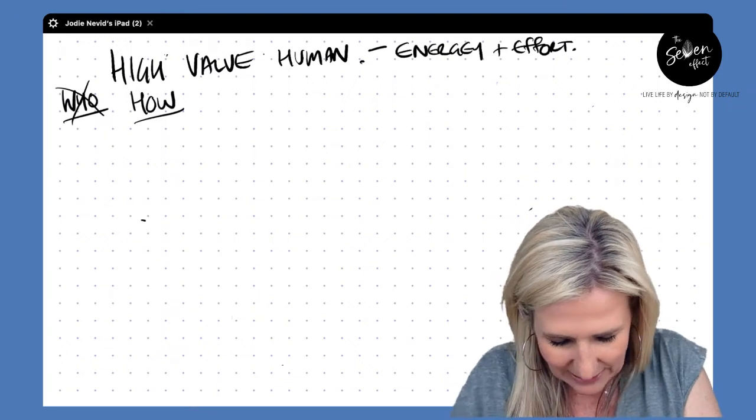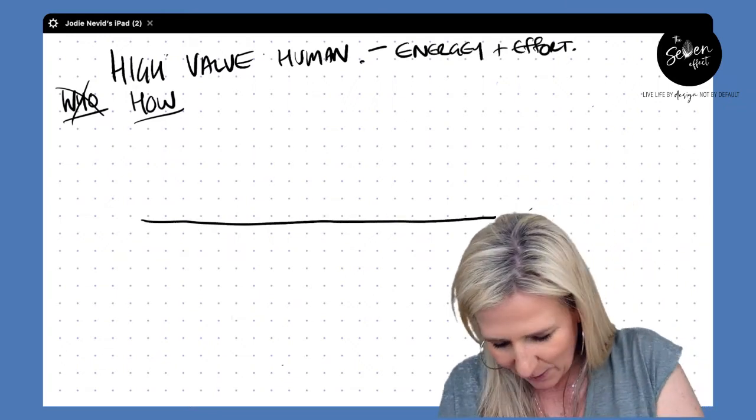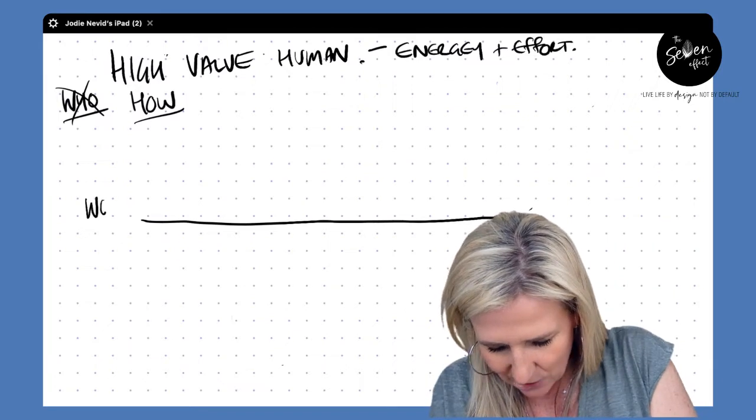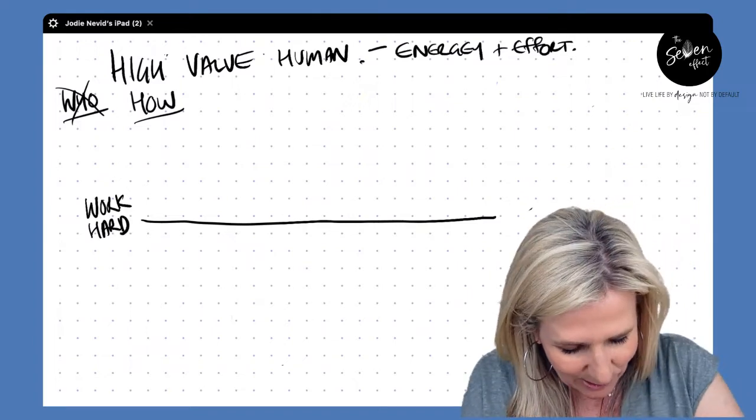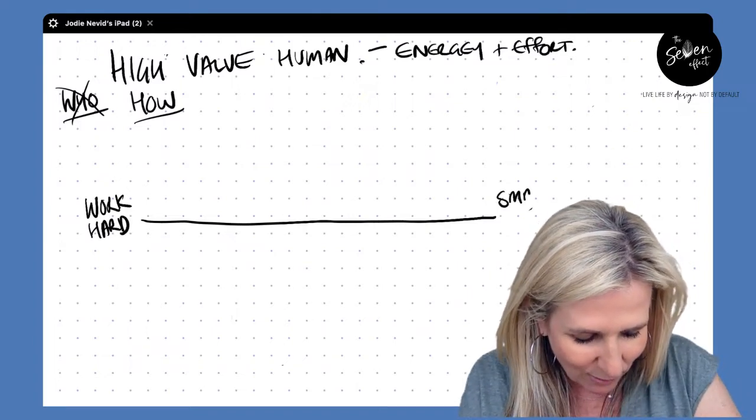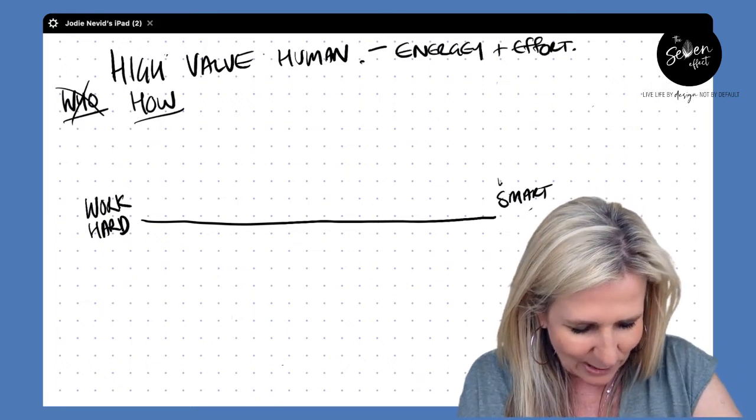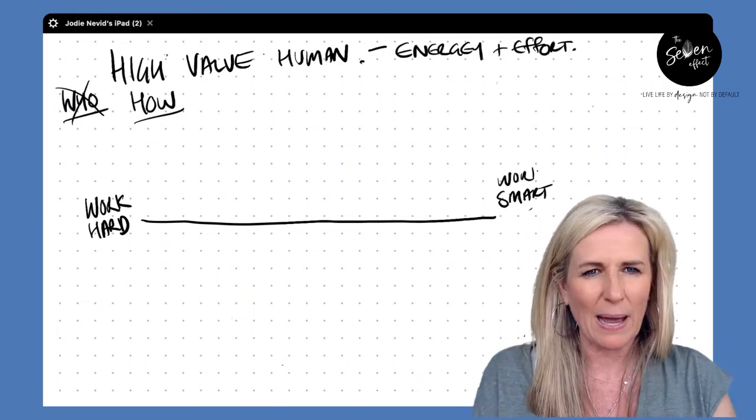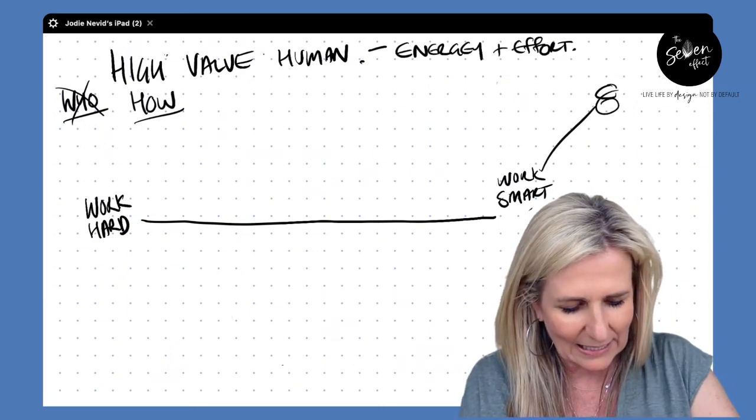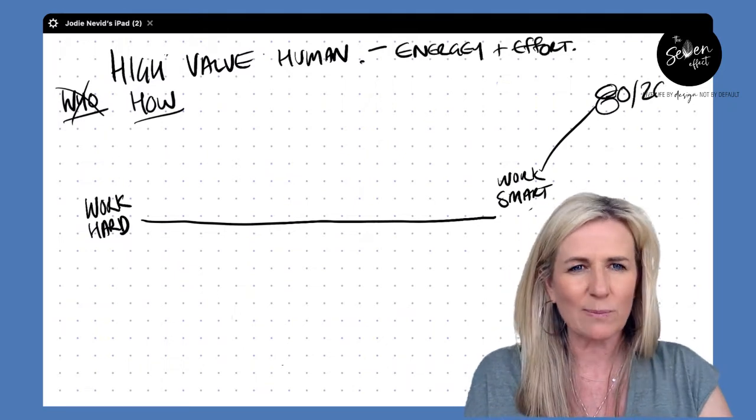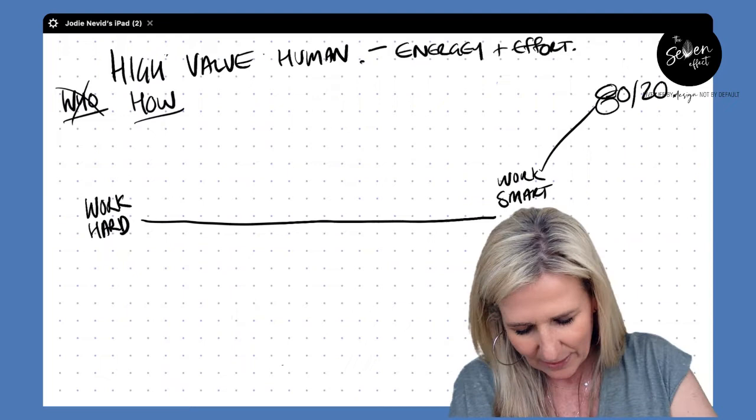Well, firstly, we'll look at the effort continuum this way. And there are people who by nature will put in lots of effort and work hard. And there are also people who have cracked the code on how to get great results with less effort. And so they like to work smart. Hot tip, the key to working smart is really understanding the 80-20 principle, which is all about low effort, high rewards. So we've got that one.